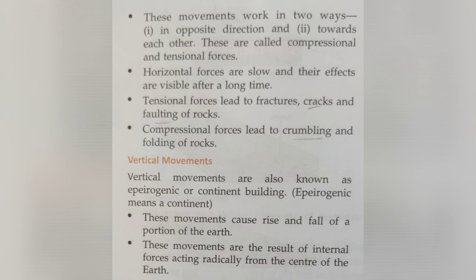Now let's study about vertical movements. Vertical movements are also known as eperiogenic or continent-building movements. Eperiogenic means related to a continent — a continent is a part of land surrounded by water. These movements cause the rise and fall of portions of the Earth. They result from internal forces acting radially from the center of the Earth. These movements are responsible for the formation of block mountains and rift valleys, and they are powerful enough to cause the rise of extensive areas such as continents.